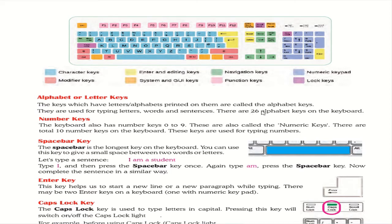Alphabet or letter keys are the keys that have letters printed on them — there are 26 alphabet keys on the keyboard. The keyboard also has number keys zero through nine, giving a total of 10 number keys, which are used for typing numbers.